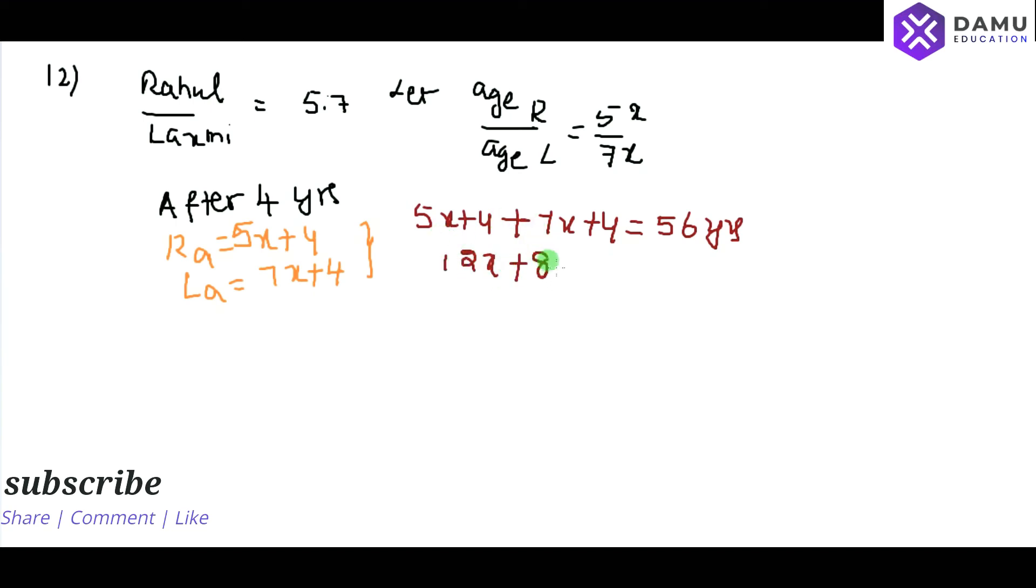4 plus 4, 8, that is 56. So 12x will be equal to 56 minus 8. So 12x will be equal to 48.